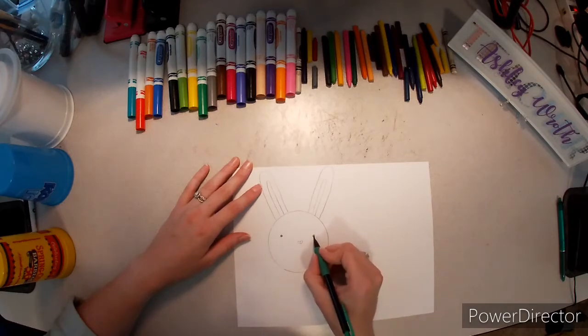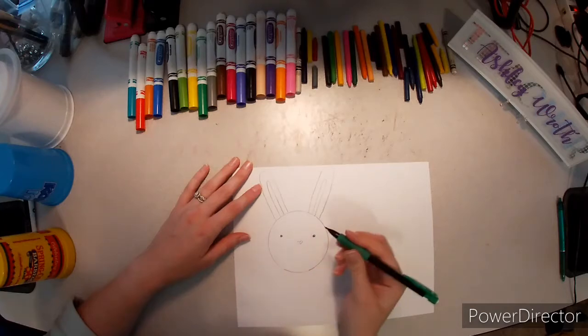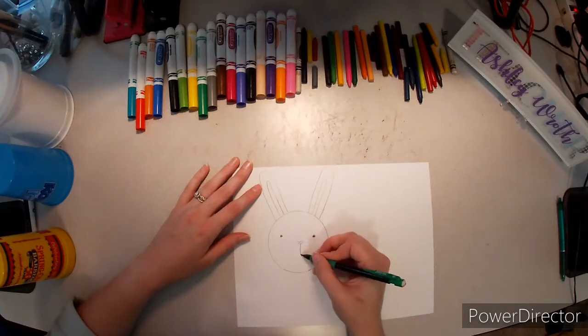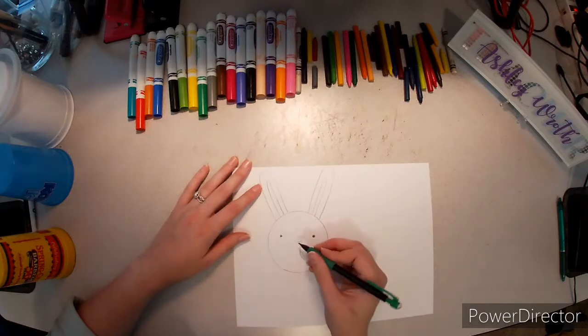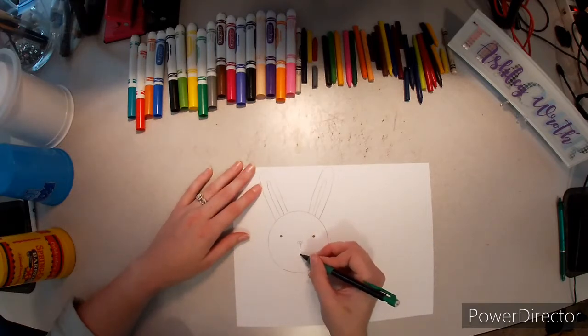Now, from this bottom corner of the nose, we are going to go down and back up like a J. Same thing on the other side. Down and back up like a J.